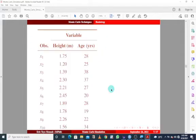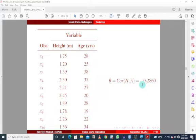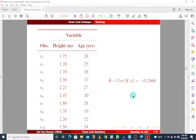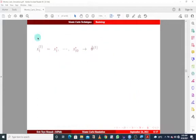I want to use a dataset to illustrate these first three steps. Assuming we have 10 observations — that's the sample size — and we want to look at the correlation between height and age. From the observed sample, the estimate is a correlation of minus 0.2860. We want to know how we can use bootstrapping to estimate this parameter of interest. For the first replicate, we need a sample size of 10, since the number of observations from the observed sample was 10, but this sampling is done with replacement.